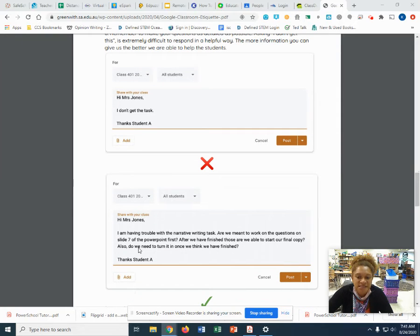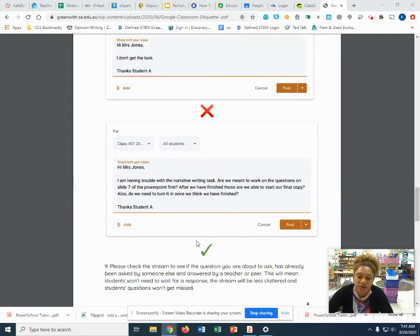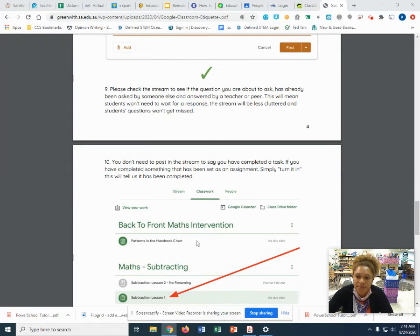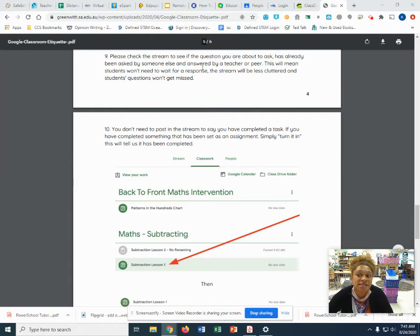So saying 'I'm having trouble with the narrative writing task' and then asking the question really helps me to help them get the correct answer. Check the stream to see if the question you're asked has already been asked by someone else and answered. So always have your child go back and read and see what's available there.